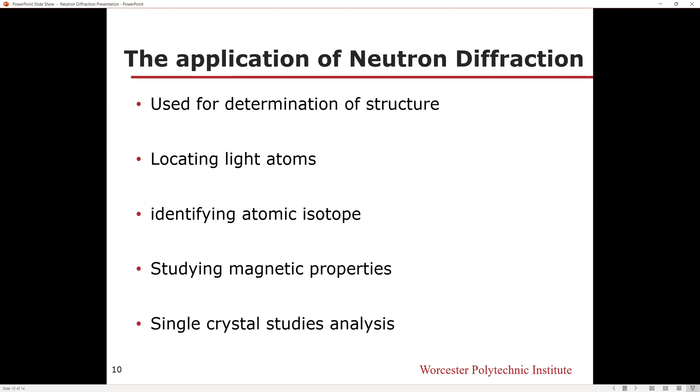Neutron diffraction can be used for determination of structure, locating light atoms, identifying atomic isotopes, studying magnetic properties, and single crystal structure analysis.